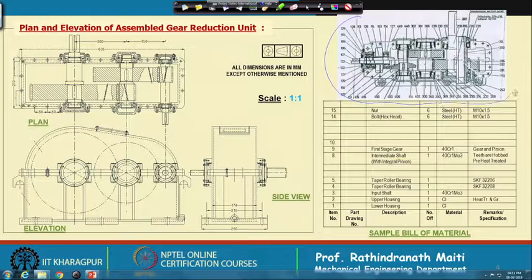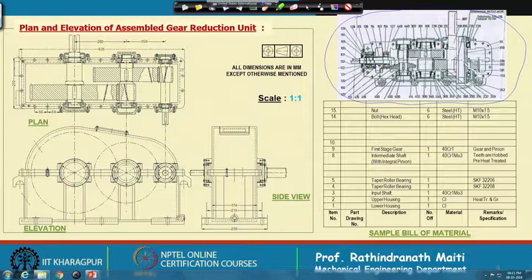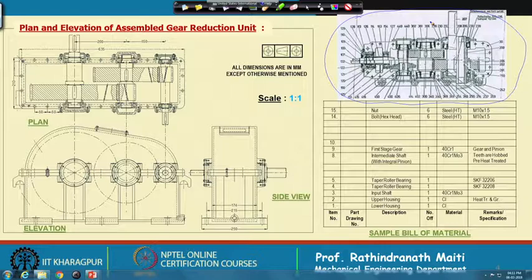If we want to give the details of all items, it will look something like this. We have to give an item number to each and every item. This example is a 3-stage gear box so more components are there, including bevel gear, and as described earlier, you can put either set 1 or set 2, or solid shaft or hollow shaft — that is why the number of components is more.